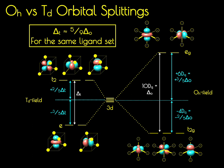In contrast, in Td symmetry, one finds that the dx²-y² and dz² orbitals — the E set — are stabilized, and the dxz, dyz, and dxy orbitals — the T2 set — are destabilized relative to the spherical field.